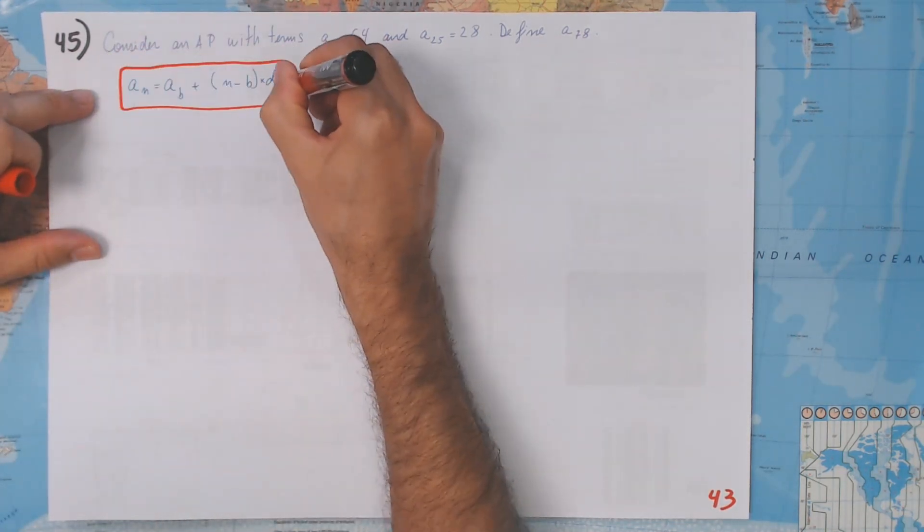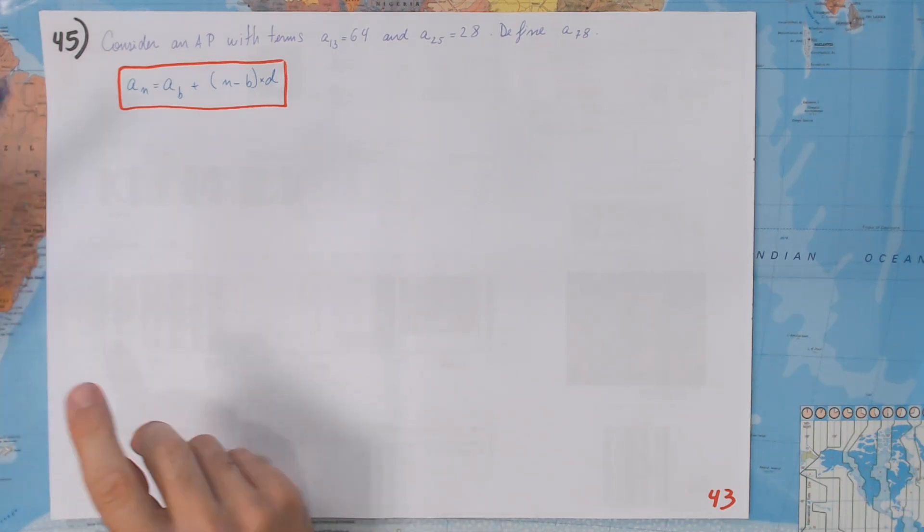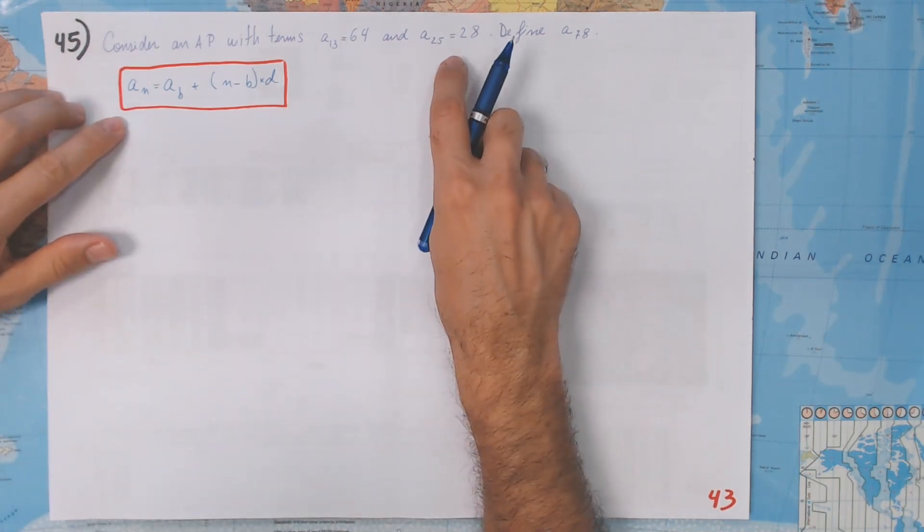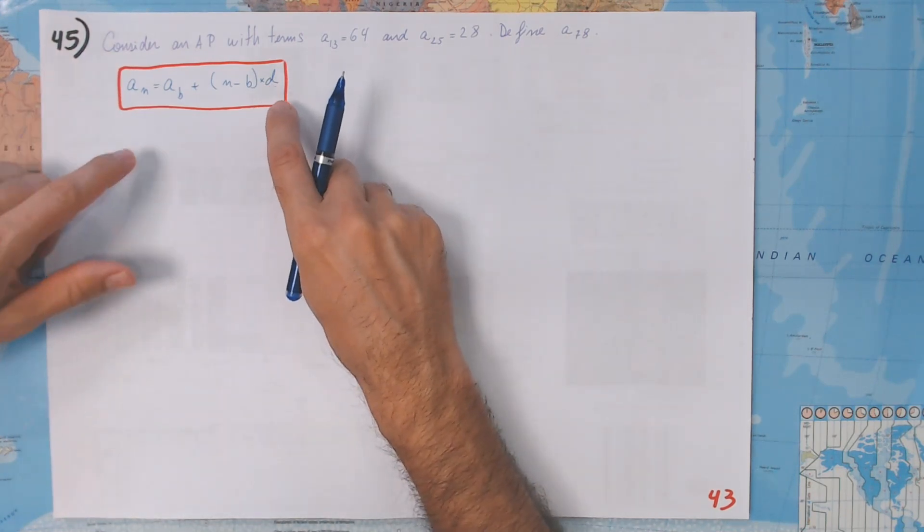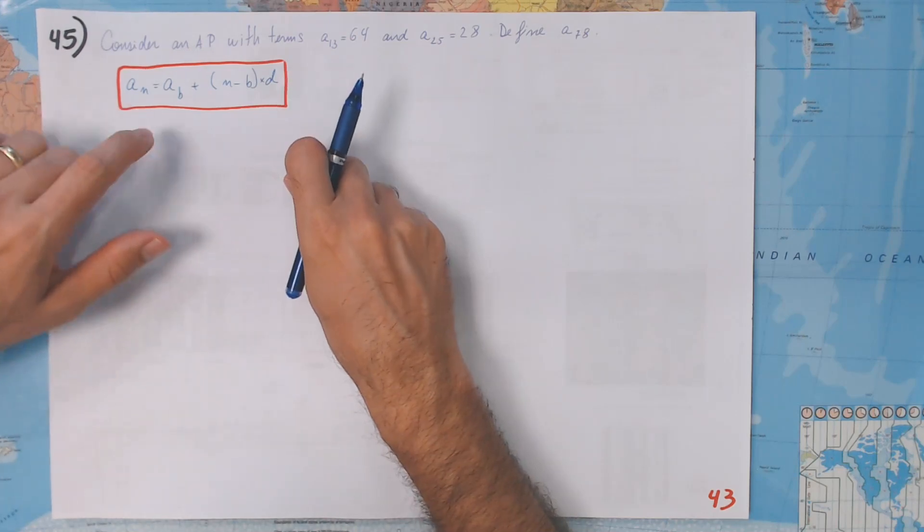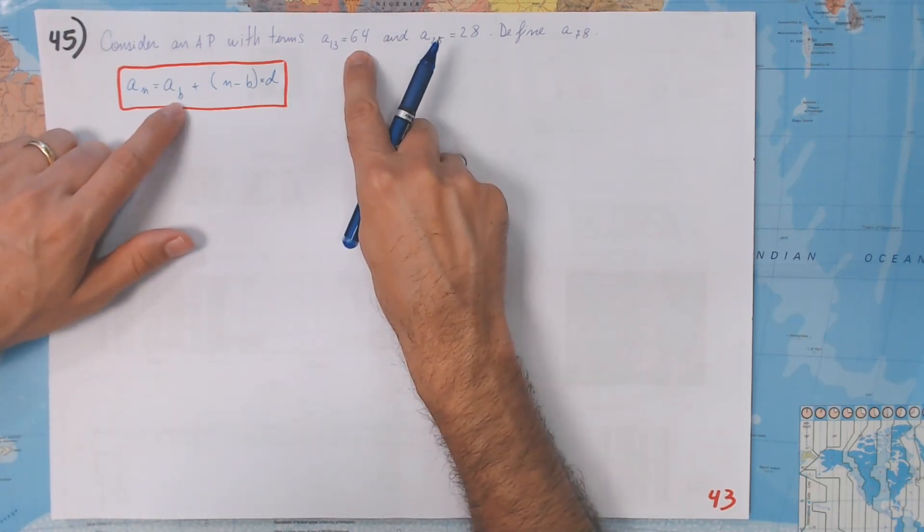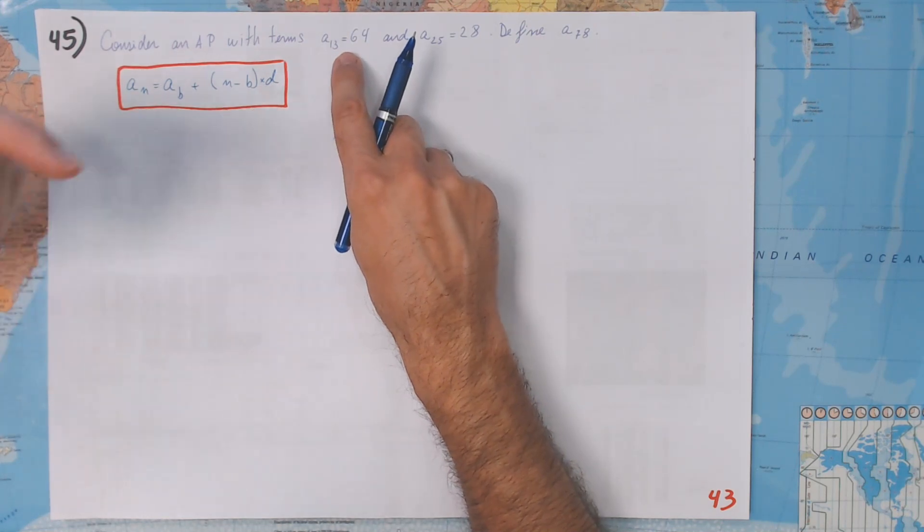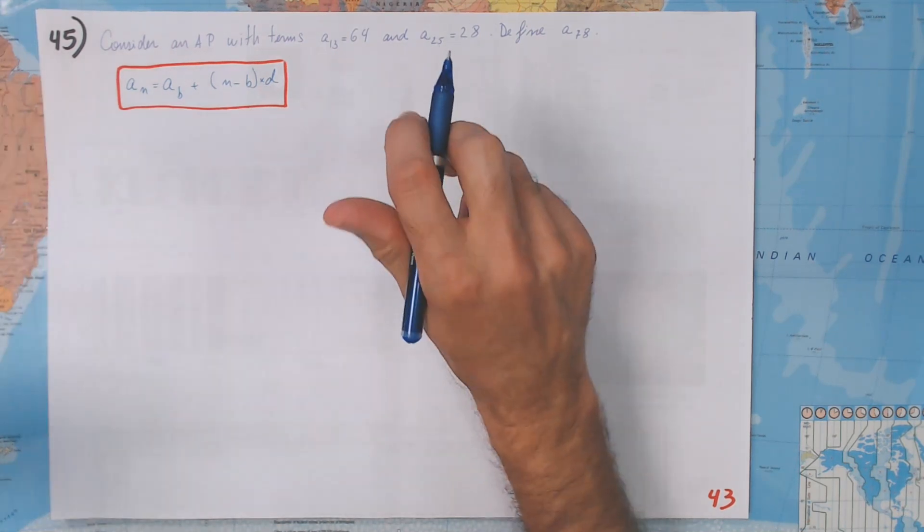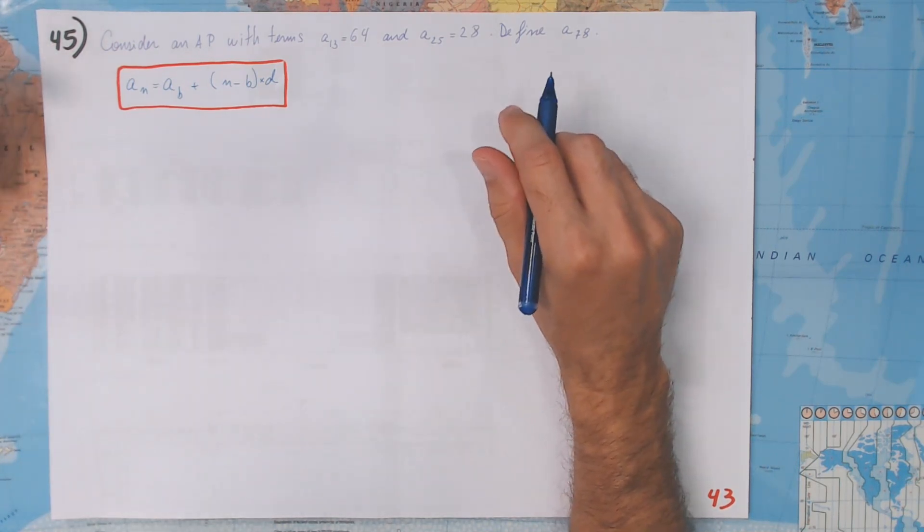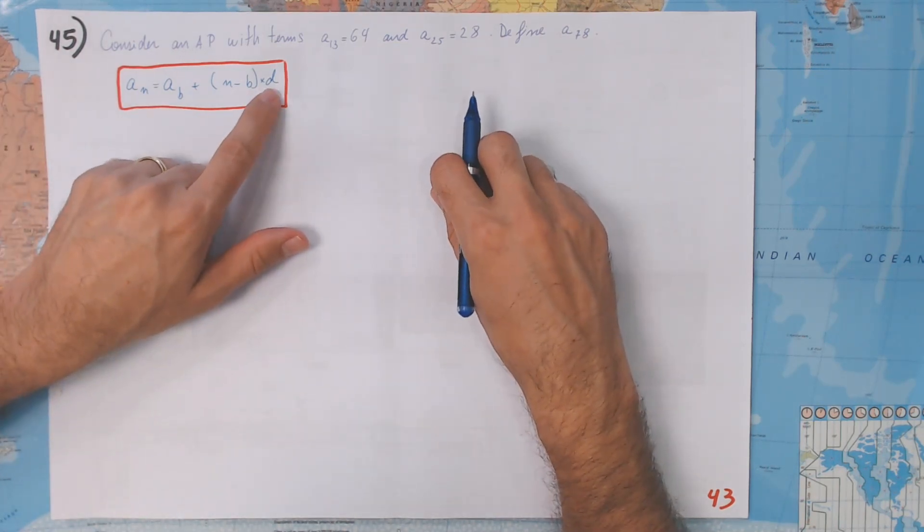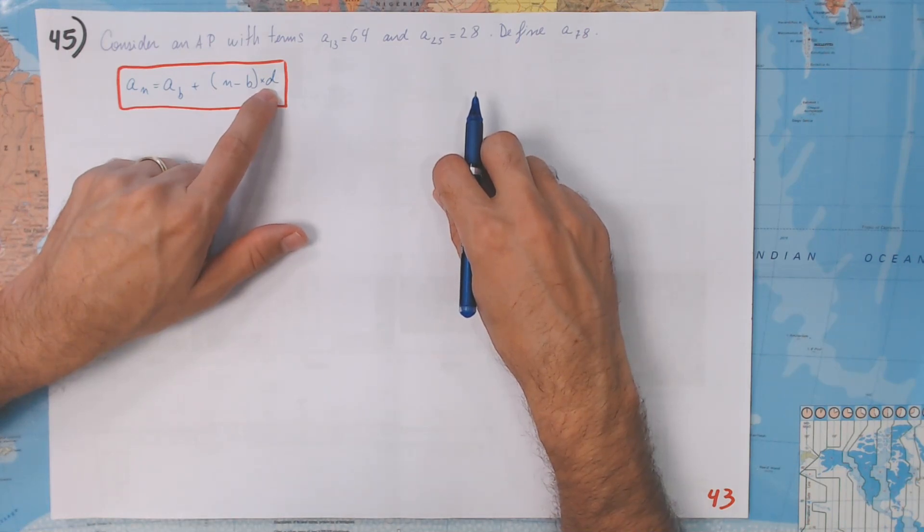If you haven't done it yet, think about what you're going to do next after we have D. We're going to have D because aₙ is this one, a_b is this one, and n minus b is 25 minus 13, which is 12, so we can find D. Once we find D, what are we going to do? I just don't want you to just follow my reasoning. I want you to think. With that D, knowing D and knowing a term, we can know every single term in that sequence.